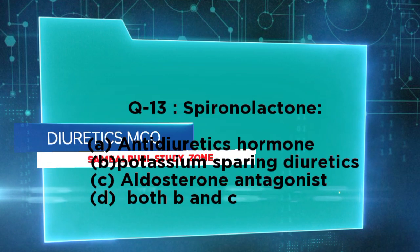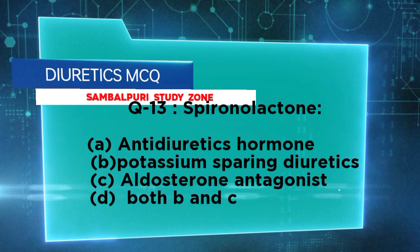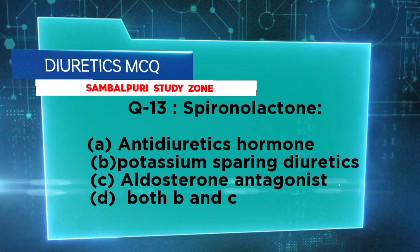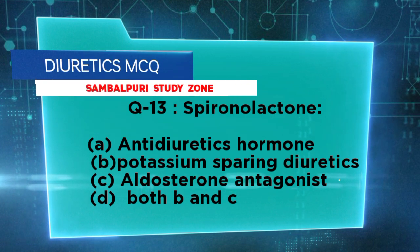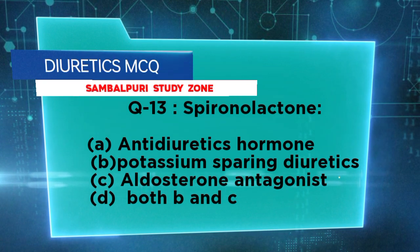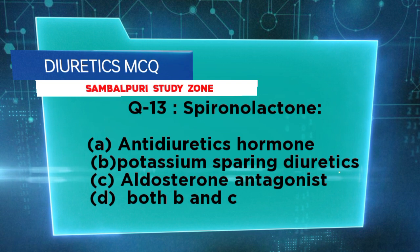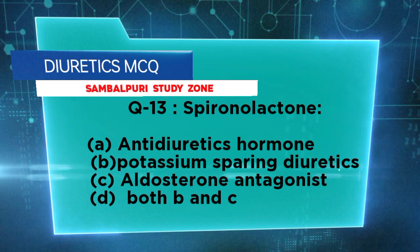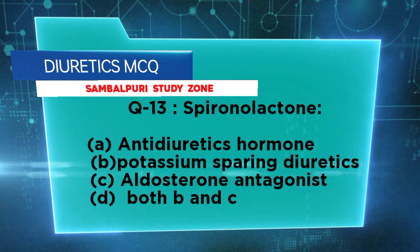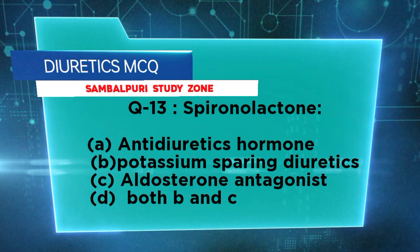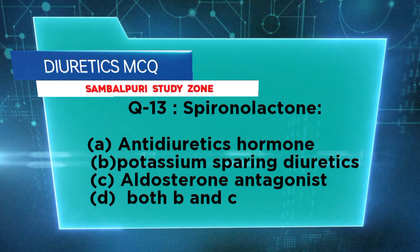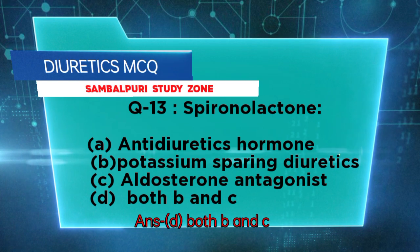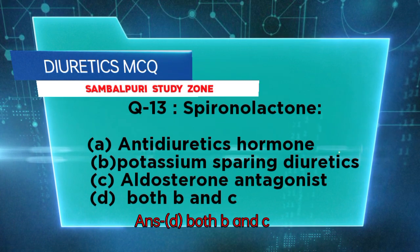Spironolactone is classified as: antidiuretic hormone, potassium-sparing diuretic, aldosterone antagonist, or both B and C? The right answer is both B and C — it is a potassium-sparing diuretic and an aldosterone antagonist.